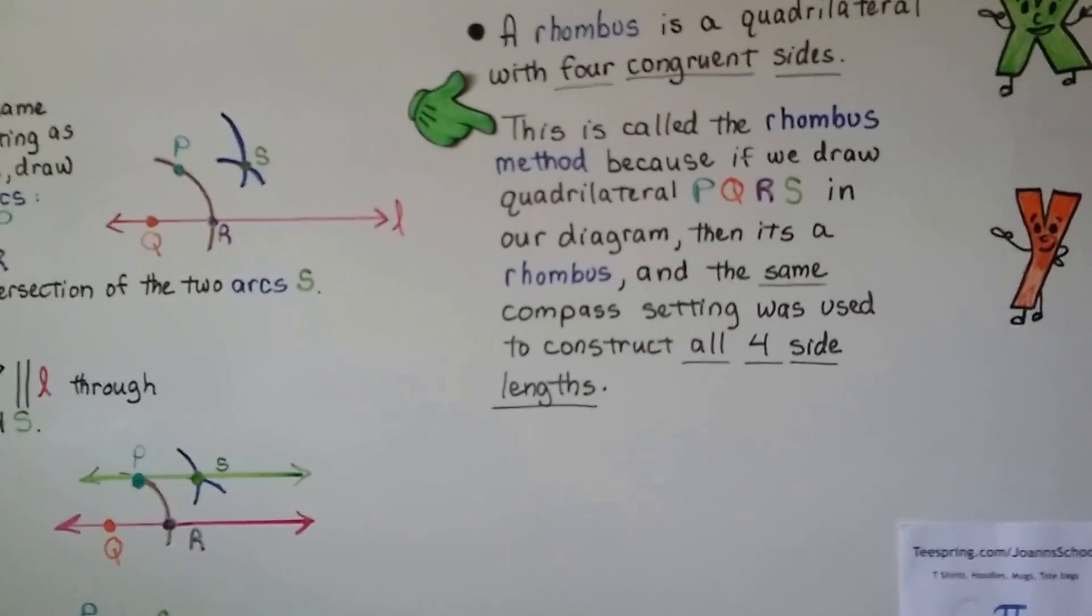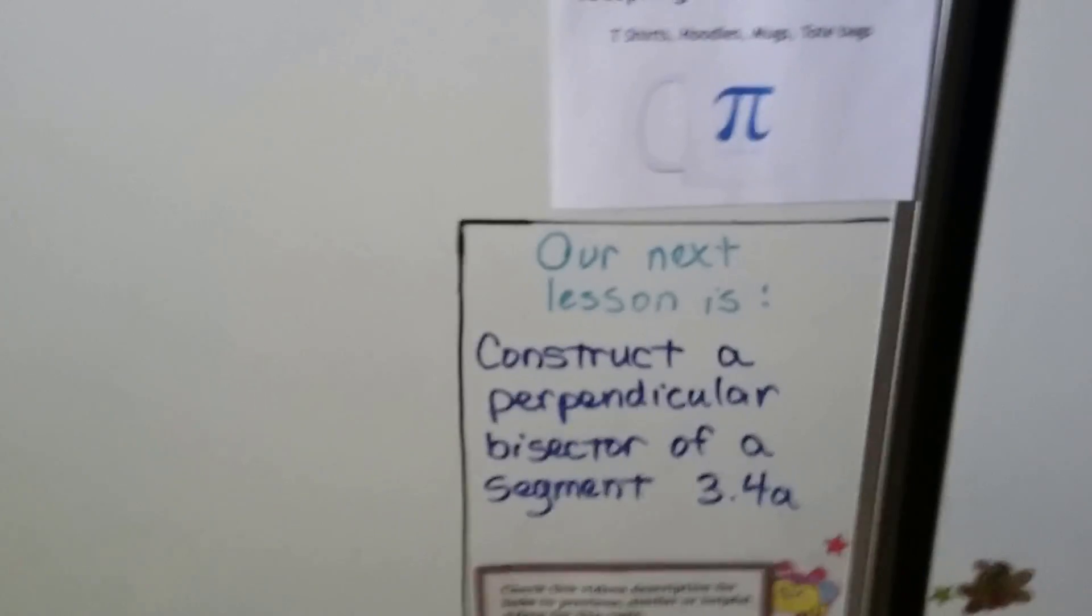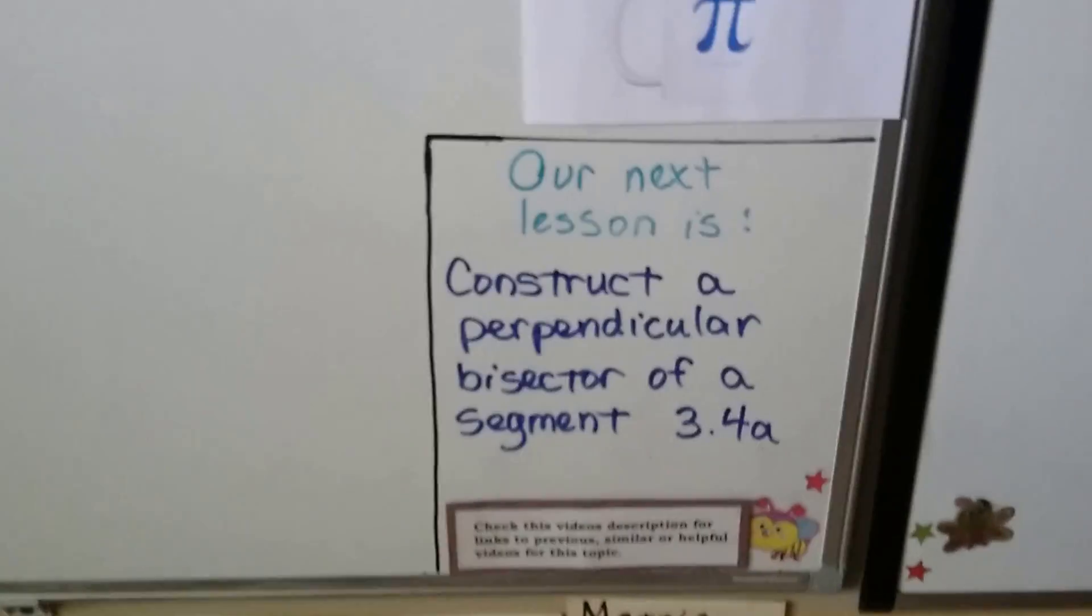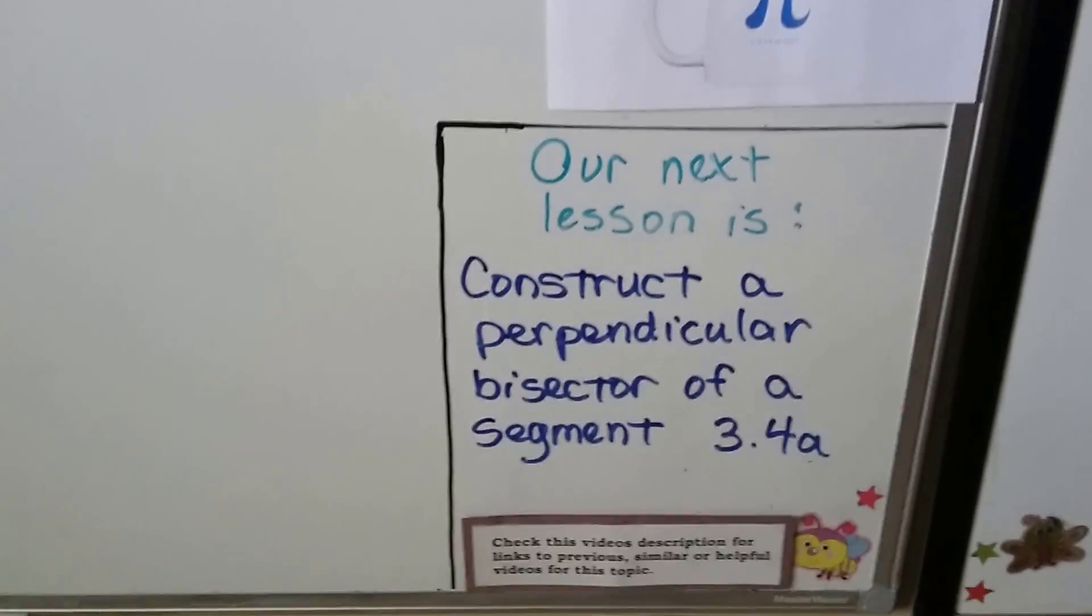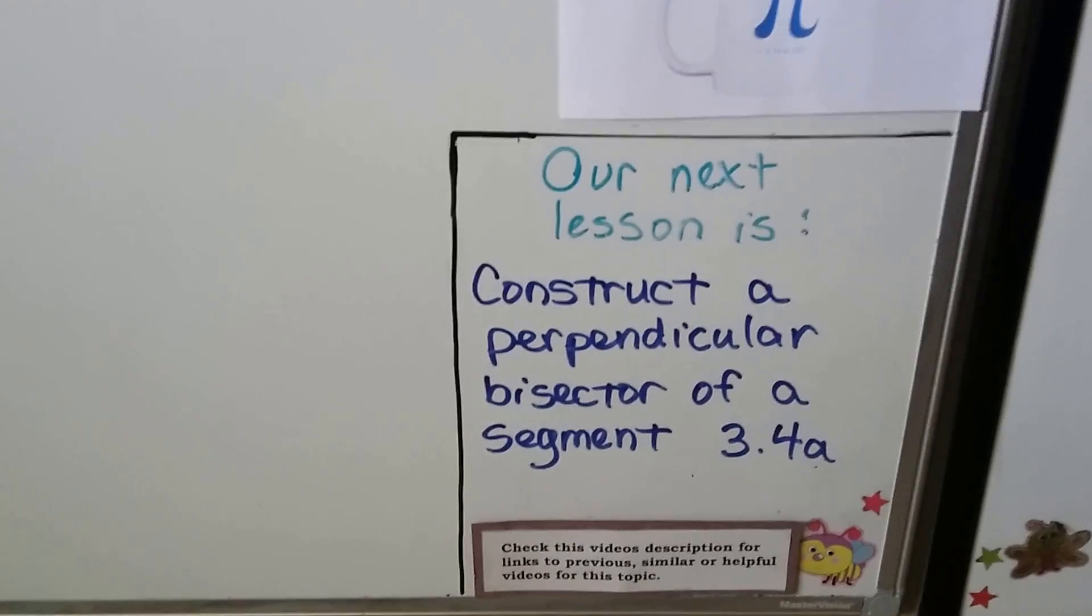So that's the rhombus method. Our next lesson is going to be 3.4. We're going to construct a perpendicular bisector of a segment, 3.4a.